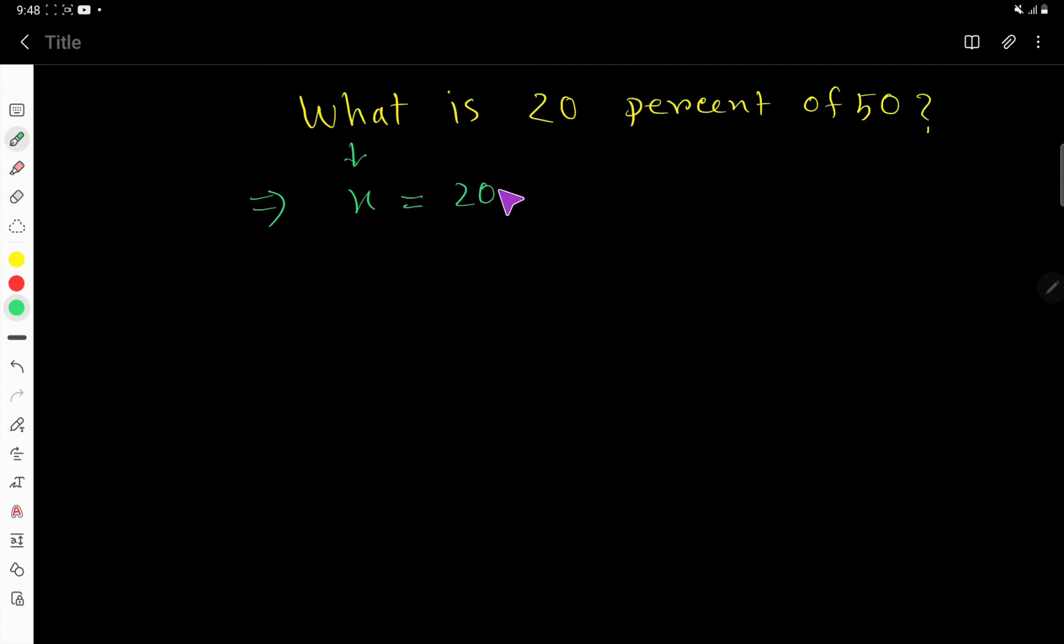20, then we have percent. Percent means this sign. Then of, of means multiplication sign. Then we have 50. So by translating, we are getting an equation. Now find out the value of x.